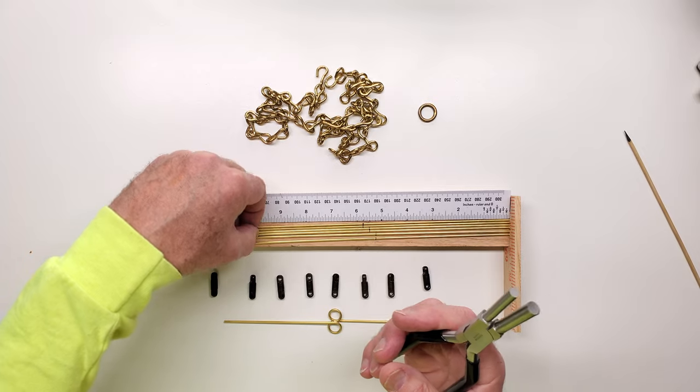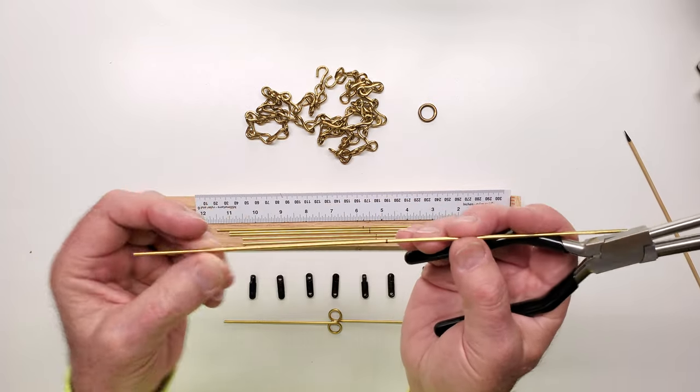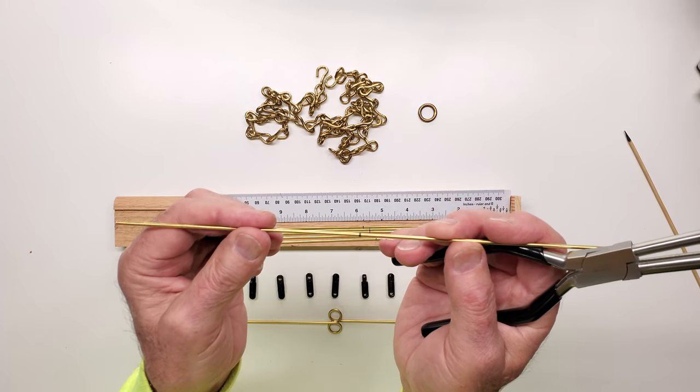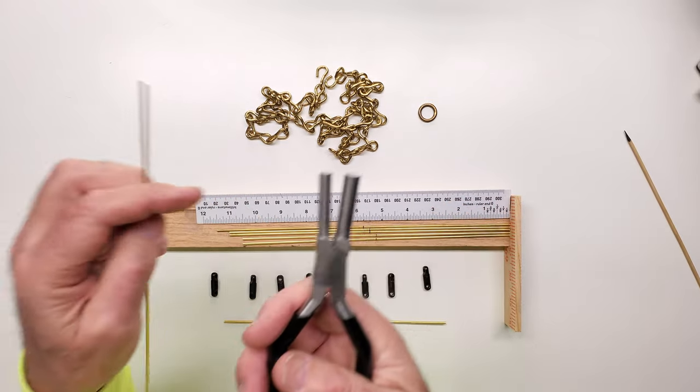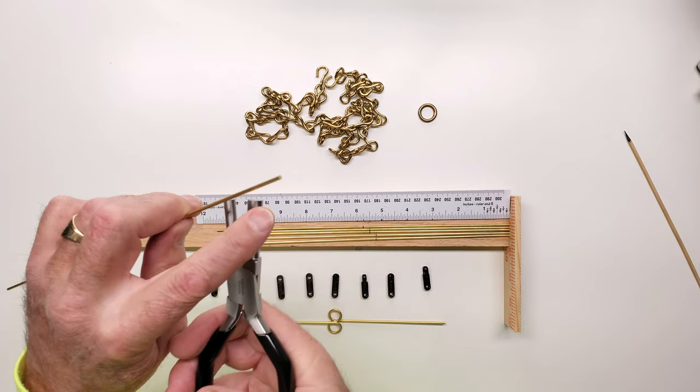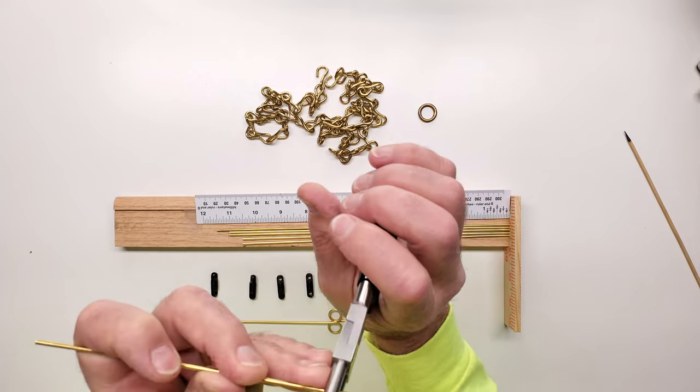Okay, time for a disclaimer here. In some of my previous videos, I've referred to these as 10mm loops, when actually my bail-making pliers are 7mm and 9mm. Oops. Okay, enough with the disclaimer.